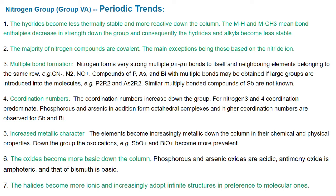Coordination numbers increase down the group. For nitrogen, 3 and 4 coordination numbers predominate. Phosphorus and arsenic in addition form octahedral complexes, and higher coordination numbers are observed for antimony and bismuth. Metallic character increases increasingly down the column in their chemical and physical properties.